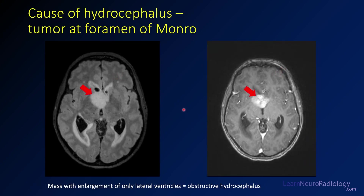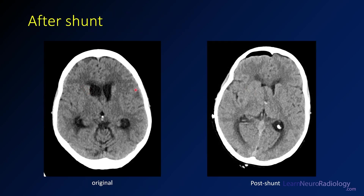The cause of hydrocephalus in this patient was a tumor at the foramen of Monroe. On FLAIR there's an expansile mass obstructing the anterior third ventricle. On post-contrast it's avidly enhancing — this was a high-grade glioma causing obstruction at the foramen of Monroe, an example of obstructive or non-communicating hydrocephalus. This patient went on to get a shunt. Before the shunt the ventricles were quite large; after the shunt there's a little post-surgical air along the right frontal convexity and some blood in the ventricle from the operation, but the ventricles themselves are starting to get smaller.